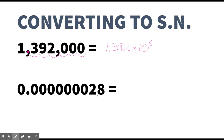Now let's do 0.00000028. We want to put the decimal right here between the first two significant figures. This might be a little tricky because you might think there are whole digits before that, but these are all leading zeros which are not sig figs — these are the first two significant figures, so the decimal goes between those two. The coefficient becomes 2.8. Then we put in the times 10. We moved the decimal eight places, and it's a really small number — a decimal — so we make that a negative eight.